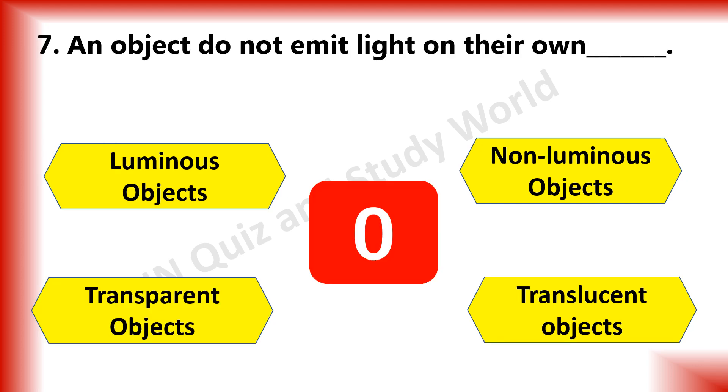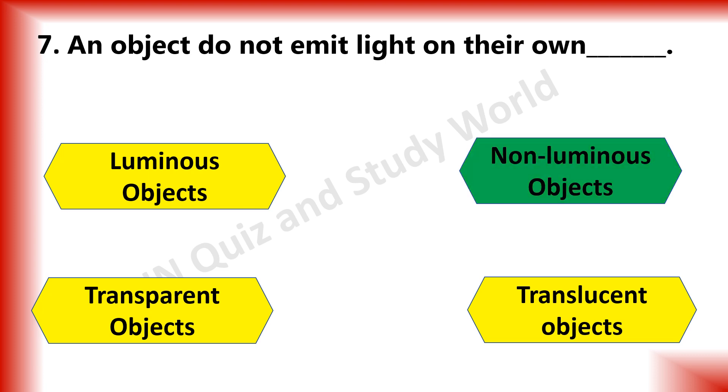What is an object that do not emit light on their own called? Is it luminous objects, non-luminous objects, transparent objects or translucent objects? The answer is non-luminous objects.